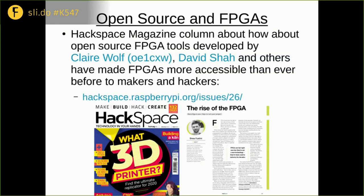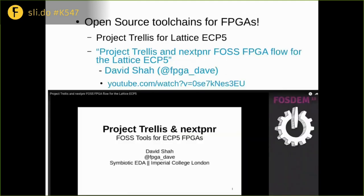If you want to know more about FPGAs, including the really exciting world of open source tools for FPGAs, I wrote another column in Hackspace that you can download for free. The FPGA on the badge was an ECP5 FPGA from a company called Lattice, and there's an open source toolchain for it, which means we don't have to download some gigantic proprietary piece of software just to load things onto the FPGA — we can use these open source tools, which is very exciting.